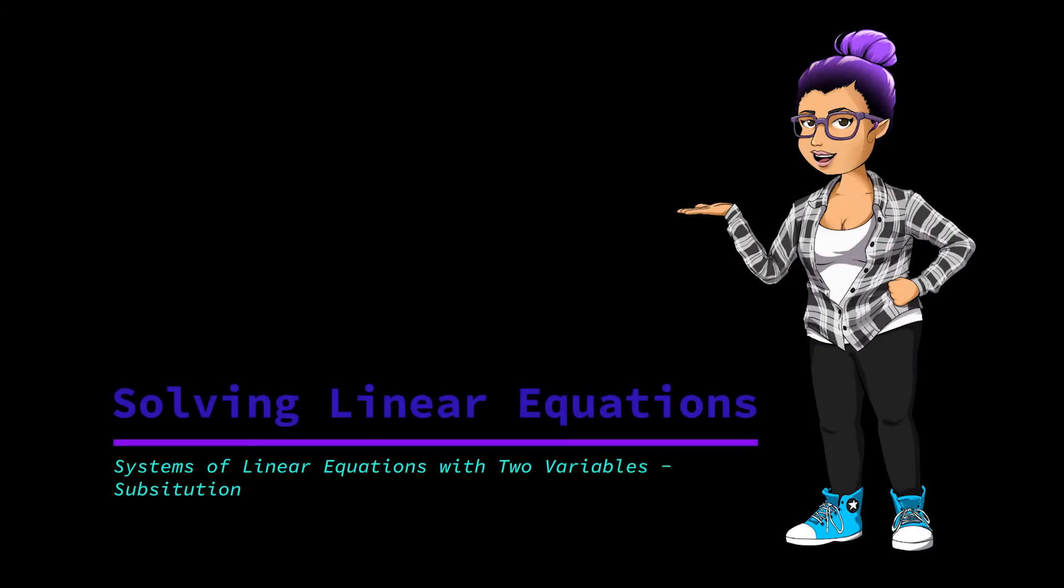Systems of linear equations with two variables: substitution. A system of linear equations is a set of two or more linear equations with two or more variables. The number of equations will match the number of variables.